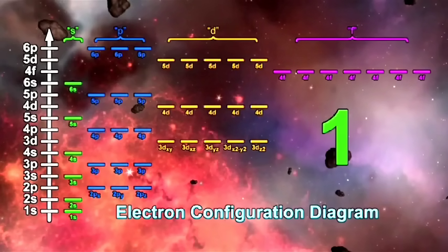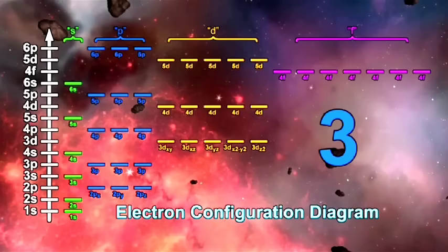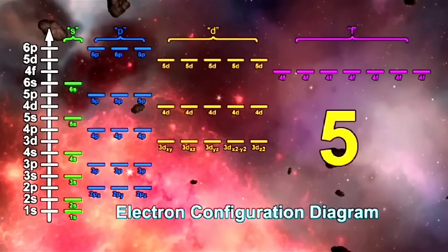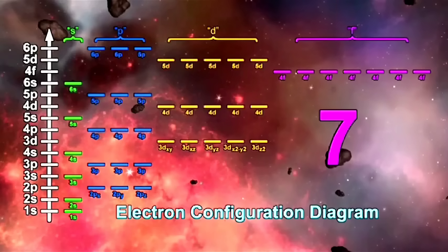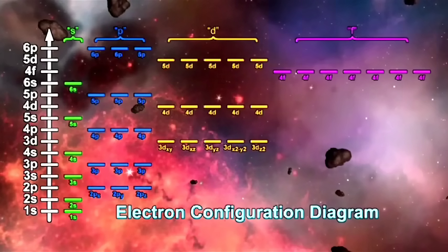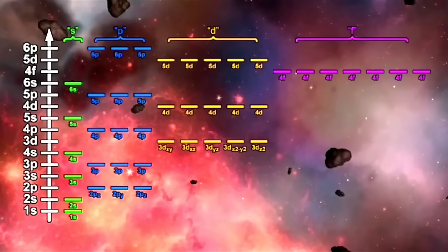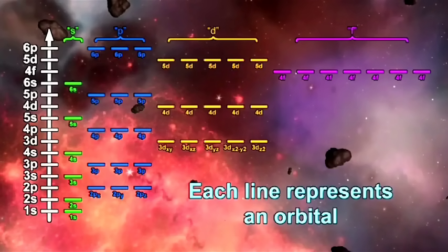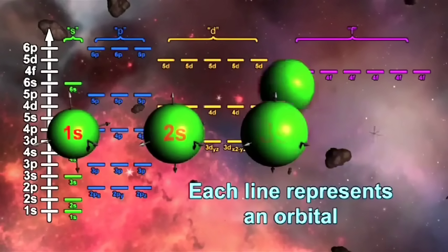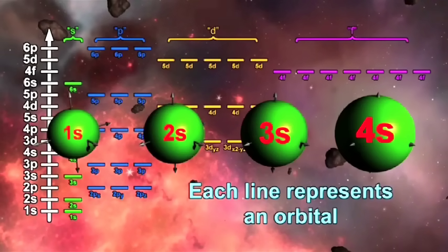Interestingly, there is one solution each time an S orbital is obtained, three solutions of the same energy each time a P solution is obtained, five solutions of the same energy each time a D solution is obtained, and seven solutions of the same energy each time an F solution is obtained. In the next chapter, we will revisit this diagram in detail. For now, let's focus on what this diagram represents — the orbitals — and each of these lines abstractly represents an orbital. For example, the first line on the electron configuration diagram is the 1s orbital, and it is a sphere. This is where the first two electrons of an atom can be found 90% of the time. All of the S orbitals are shaped like spheres.